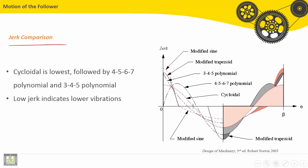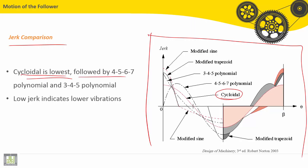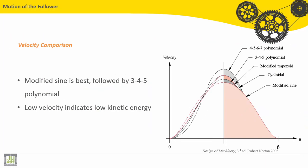Let's see now the jerk comparison. This graph presents all functions for jerk. The best one, or the lowest one, is the cycloidal. Here we have the cycloidal function for jerk - it is the best one, followed by the 4-5-6-7 polynomial, and next the 3-4-5 polynomial functions. Low jerk indicates lower vibrations.